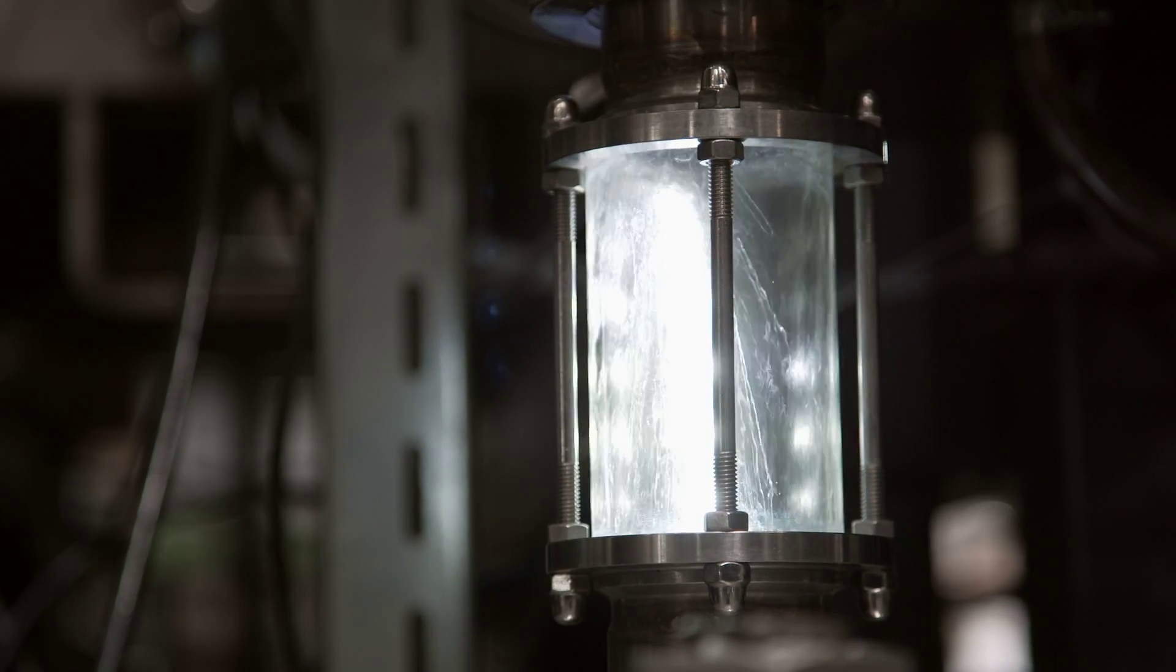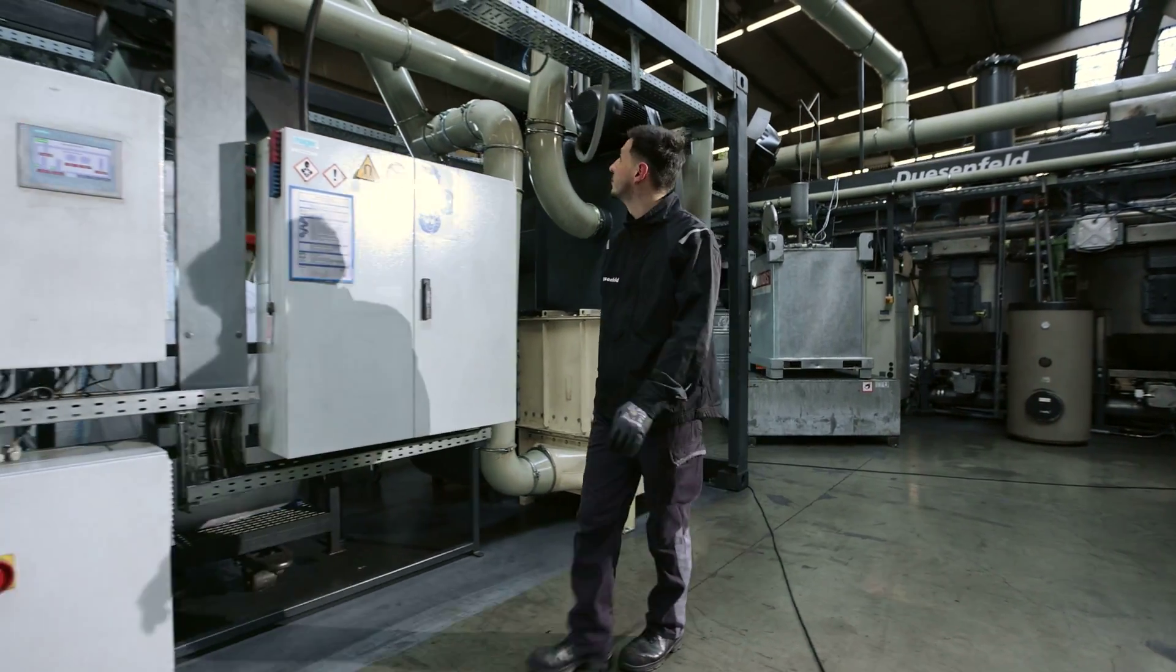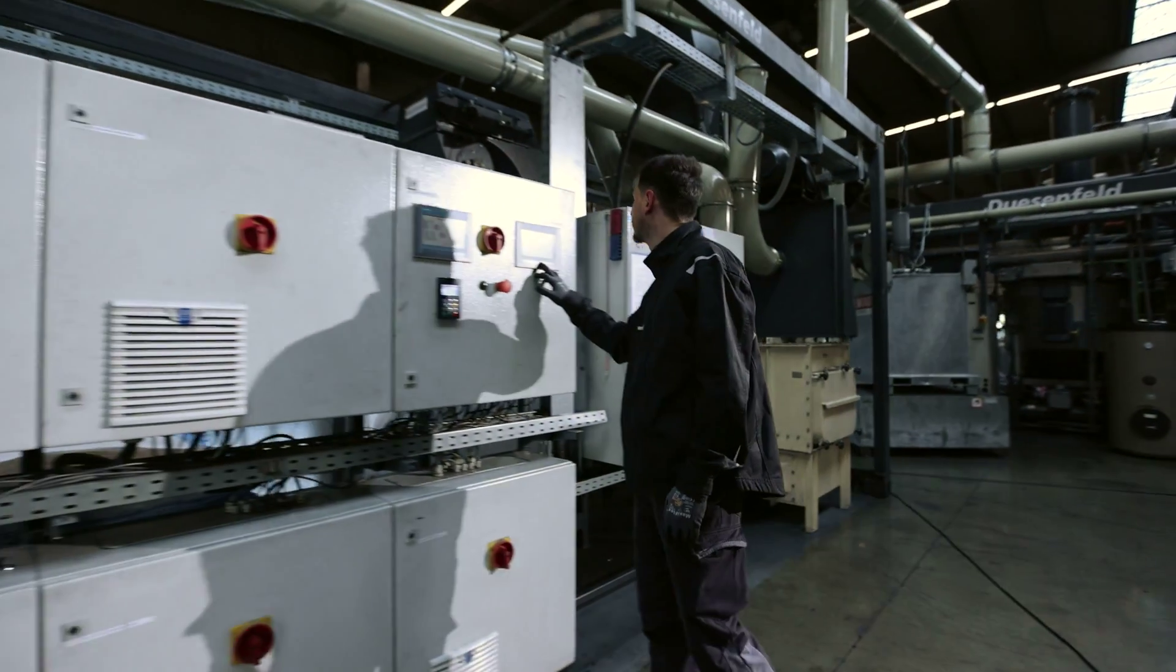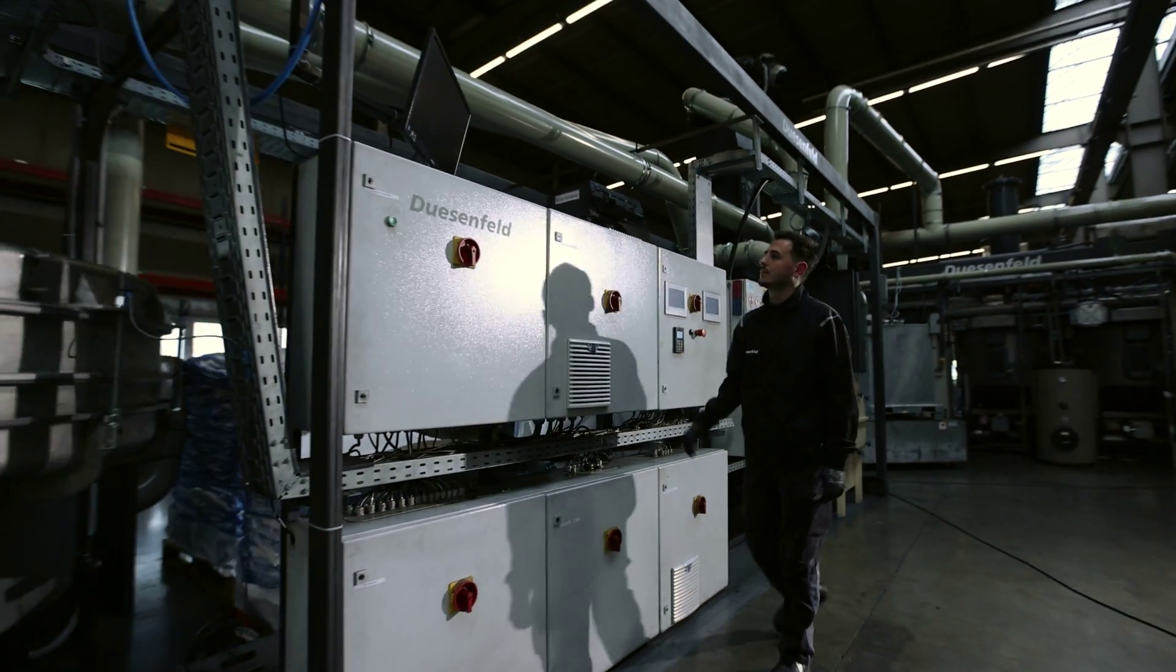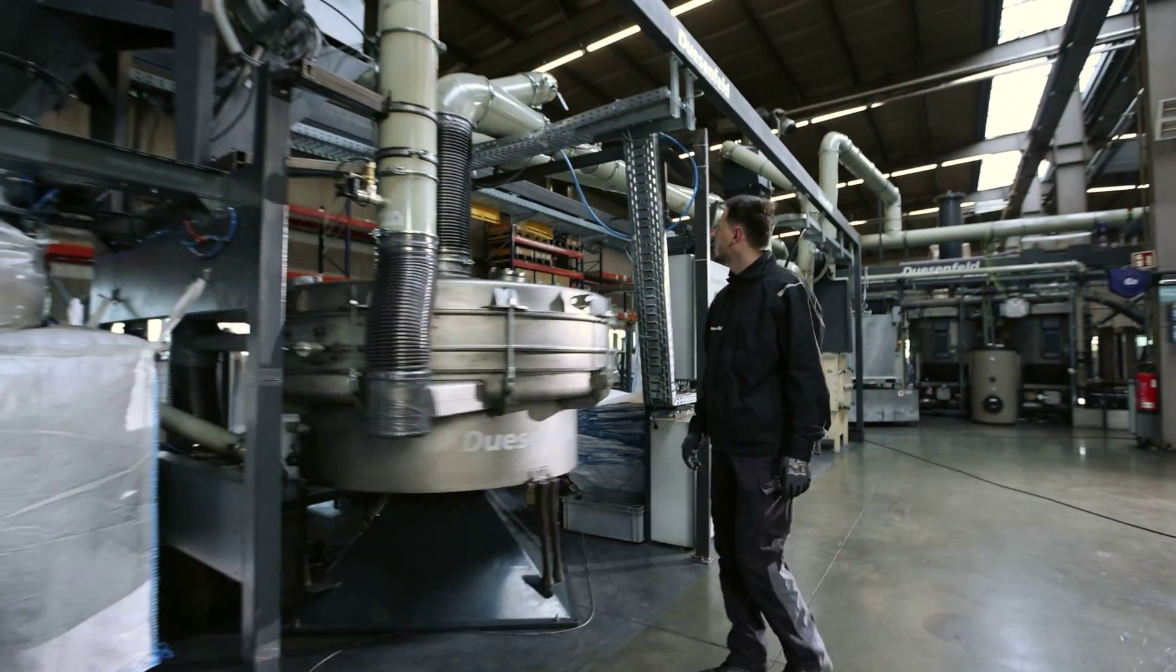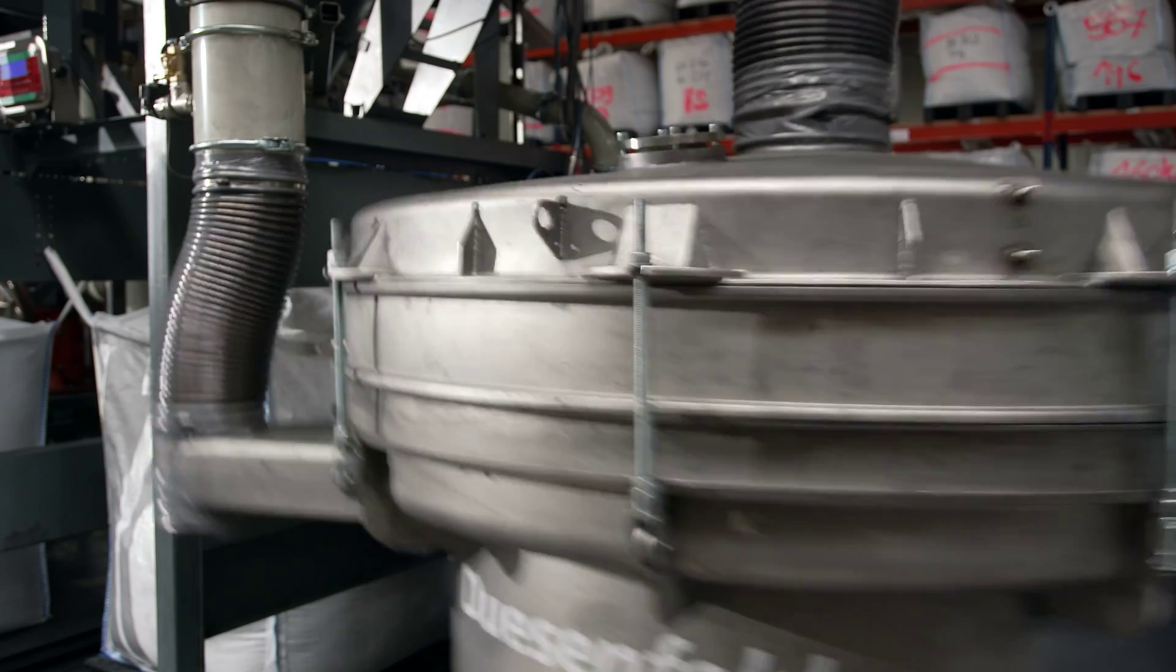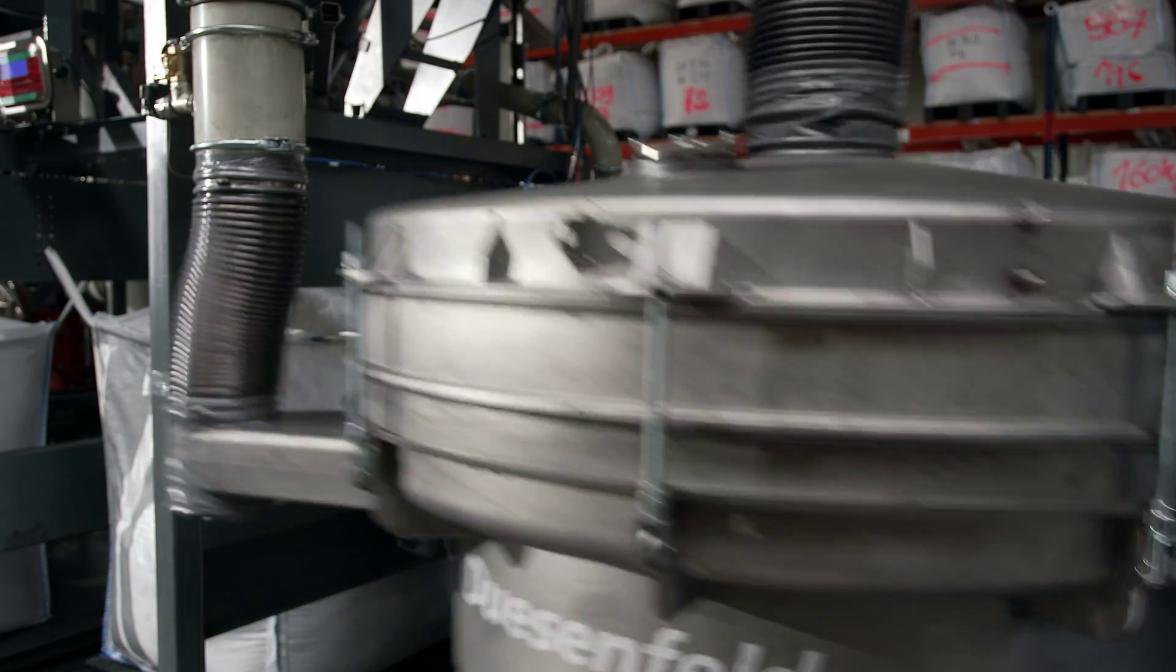The granules from the vacuum dryer continue to be processed mechanically. Air separators, impact mills, and special sieves separate into different parts. In the course of this process, the metal compounds adhering to the electrode foils, as well as the lithium salt, are shaken off from the larger parts.